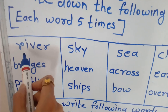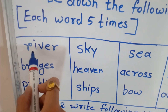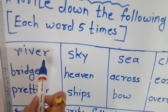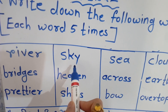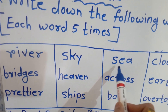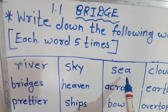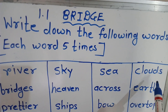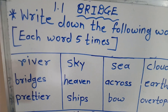Our first word is River. R-I-V-E-R, River. S-K-Y, Sky. S-E-A, Sea. C-L-O-U-D-S, Clouds.